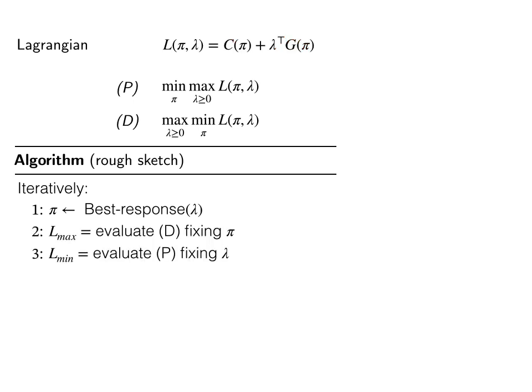And then we evaluate the primal and dual given the policy and λ to see what the best that the policy player can achieve for the primal and what's the worst that the λ player can make for the dual. If the primal-dual gap is below some threshold ω, which means that the game has achieved approximate equilibrium, then we stop and return the policy.